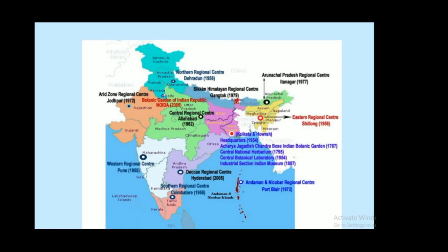BSI has set up many regional centers and units throughout the country, including: Andaman and Nicobar Regional Center at Port Blair, Satra Regional Center at Coimbatore, Deccan Regional Center at Hyderabad, Western Regional Center at Pune, headquarters and Central National Herbarium and Central Botanical Laboratory at Kolkata, Acharya Jagadish Chandra Bose Indian Botanical Garden, Central Regional Center at Shillong, Arunachal Pradesh Regional Center at Itanagar, Sikkim Himalayan Regional Center at Gangtok, Northern Regional Center at Dehradun, Botanical Garden of Indian Republic at Noida, Central Regional Center at Allahabad, and Arid Zone Regional Center at Jodhpur.